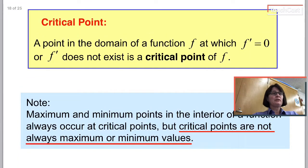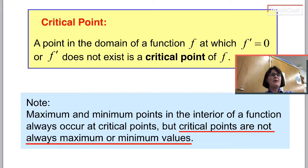So here's an important definition. A critical point. A critical point of a function f is any point on its domain at which f prime equals zero, or f prime does not exist. And then you can see here, maximum and minimal points in the interior always occur at critical points. But critical points are not always minimums or maximums. So in the AP test, they might ask you to find the location of a relative minimum. Or they might ask you to find critical points. So you have to kind of understand the difference between them, which is going to be most of what we spend our time on in 4.1 and 4.2.